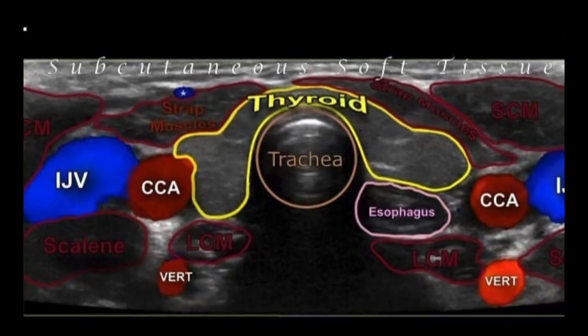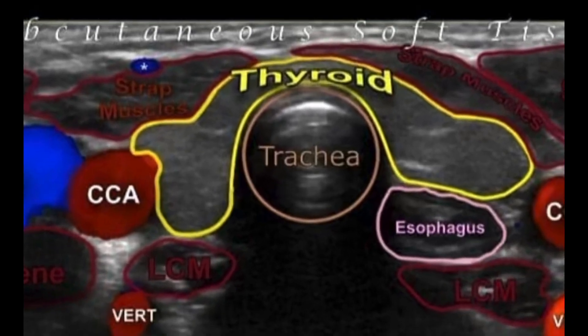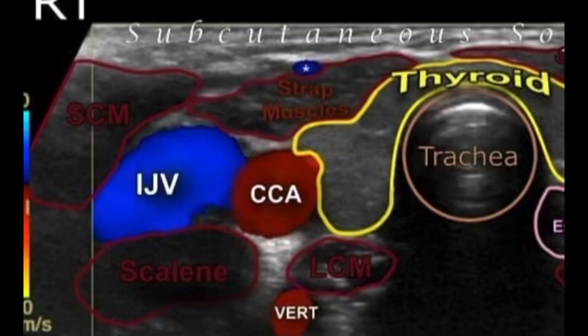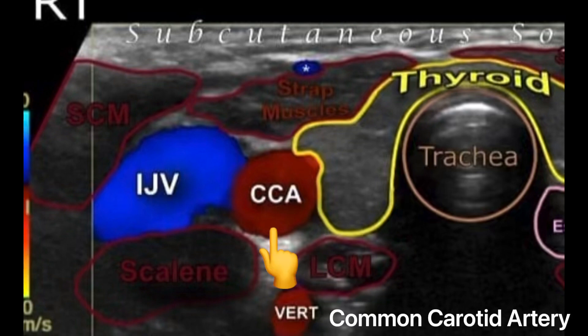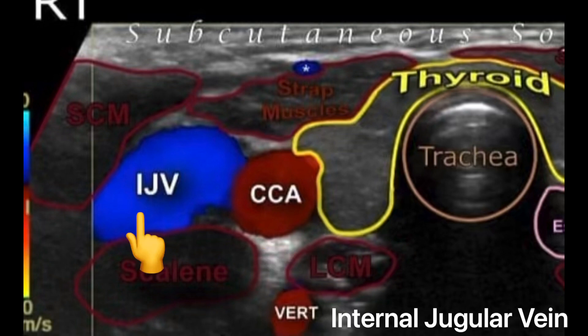Right directly posterior to the thyroid isthmus is the trachea. If we move on to the right side of the neck — which is the left side of the image — you'll notice a variety of blood vessels and muscles in anterior, lateral, and posterior positions. Let's go over the blood vessels first. Right lateral to the right thyroid lobe, you have the CCA, or common carotid artery. Anterolateral to that, you have the IJV, or the internal jugular vein.